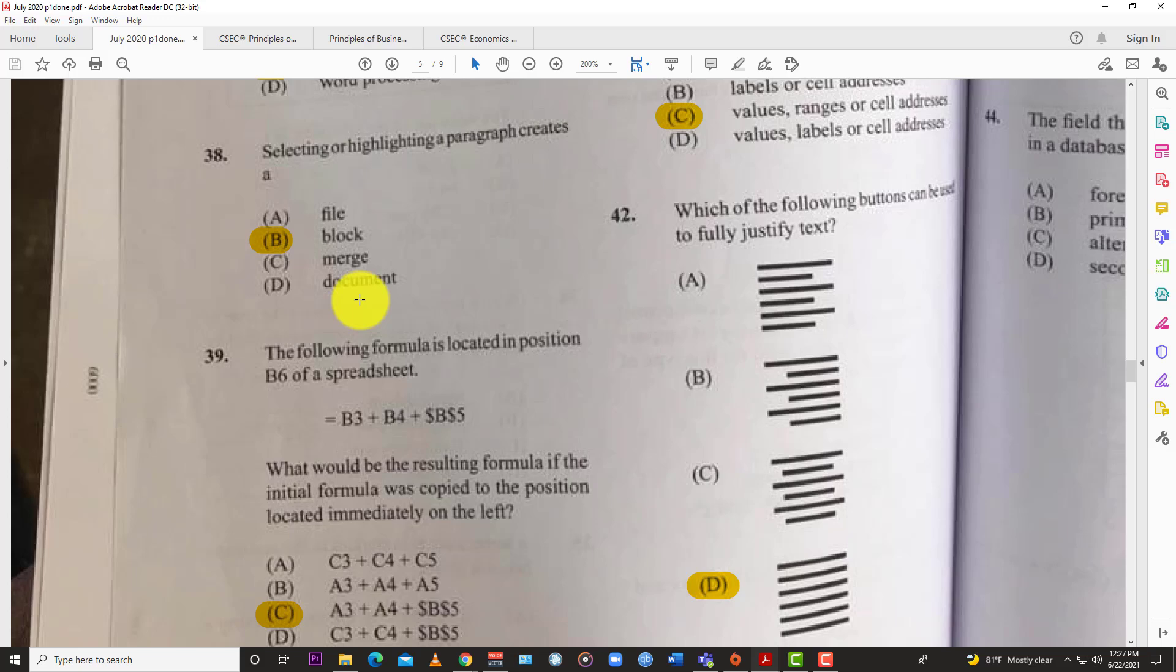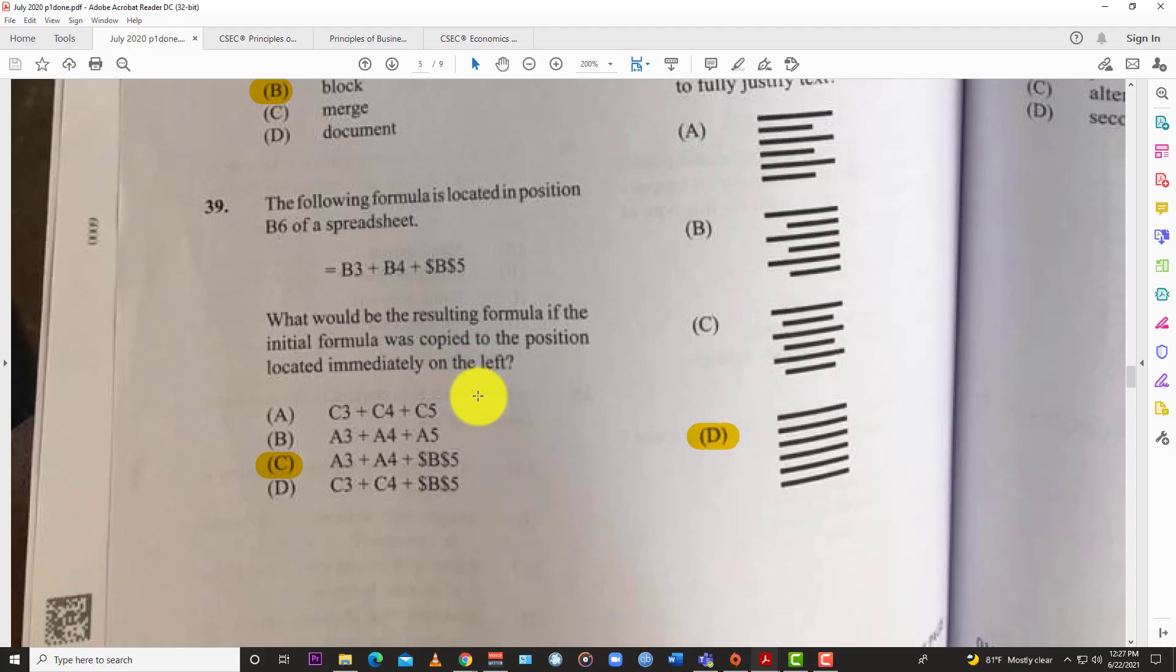Question 38: Selecting or highlighting a paragraph creates a B, a block. You see these things come up to show that this is one block.